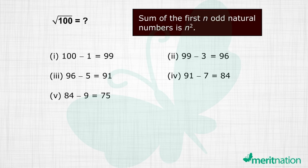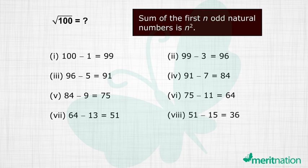So 84 minus 9 is 75. 75 minus 11 is 64. 64 minus 13 is 51. 51 minus 15 is 36. 36 minus 17 is 19. And 19 minus 19 is 0.